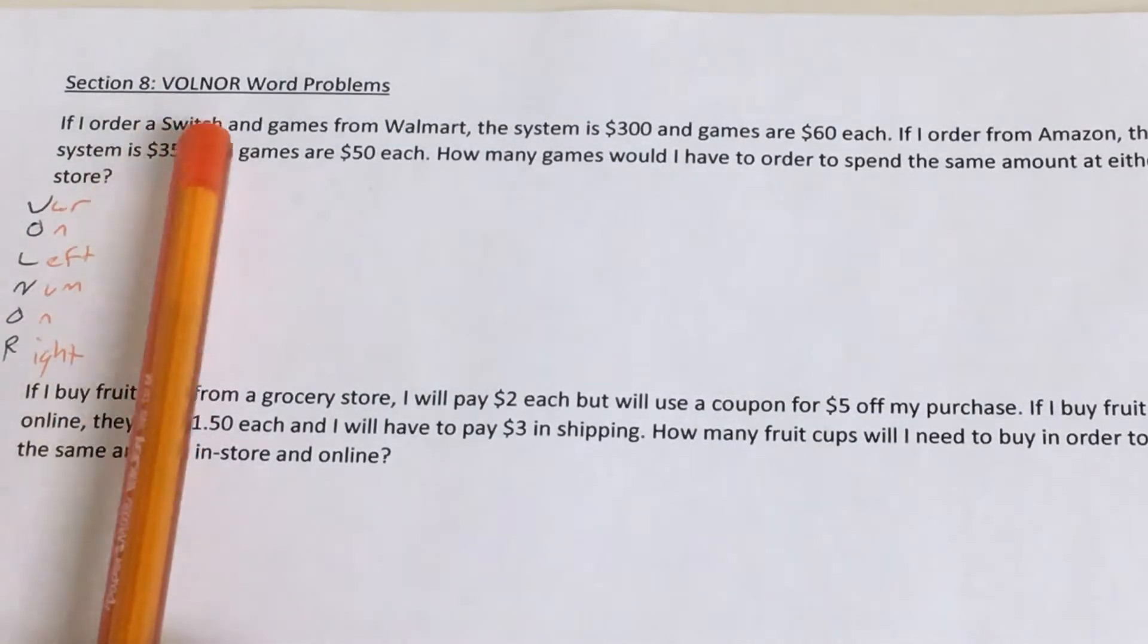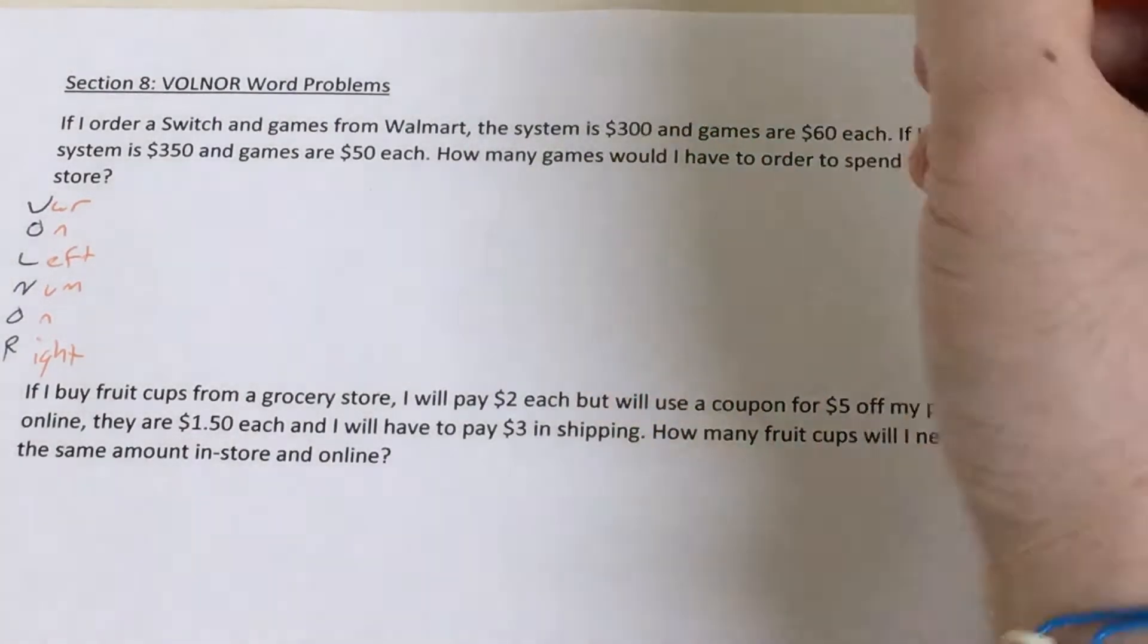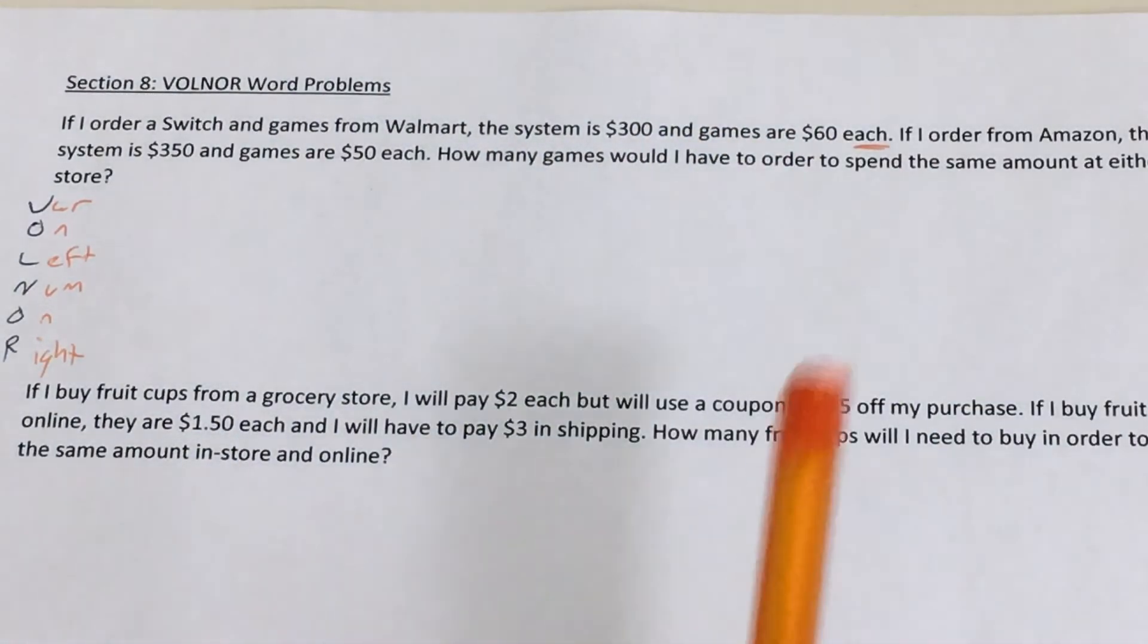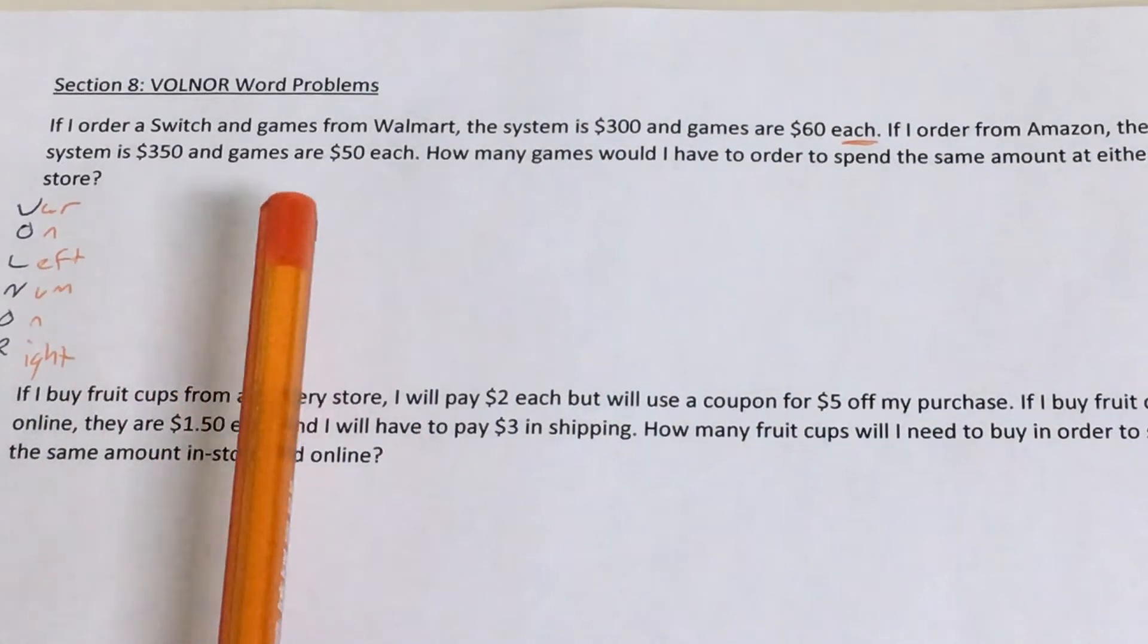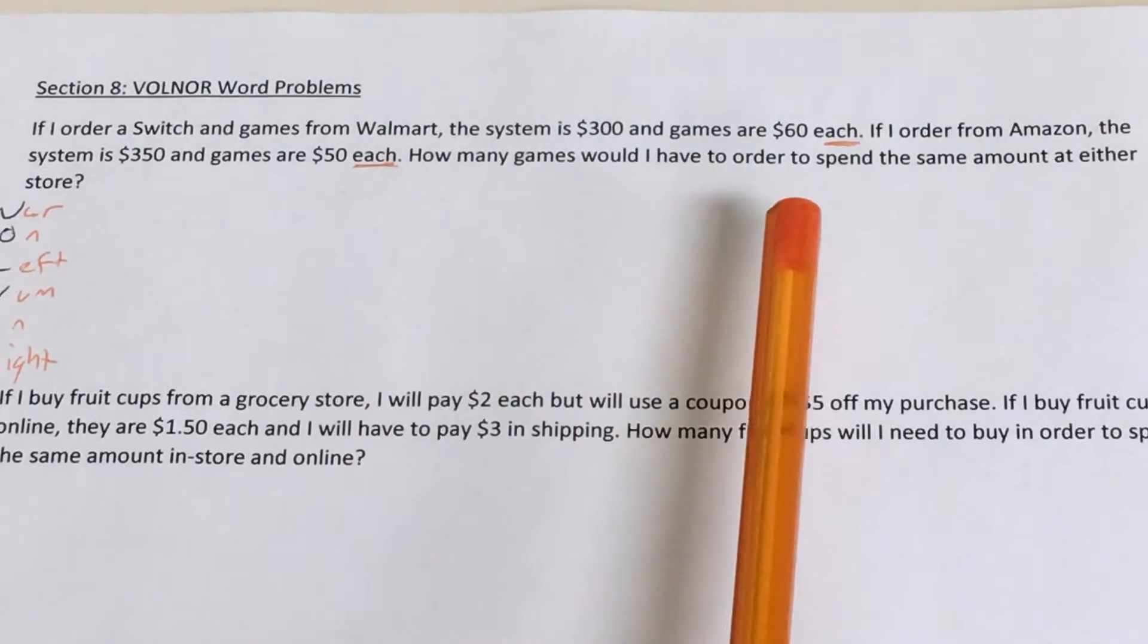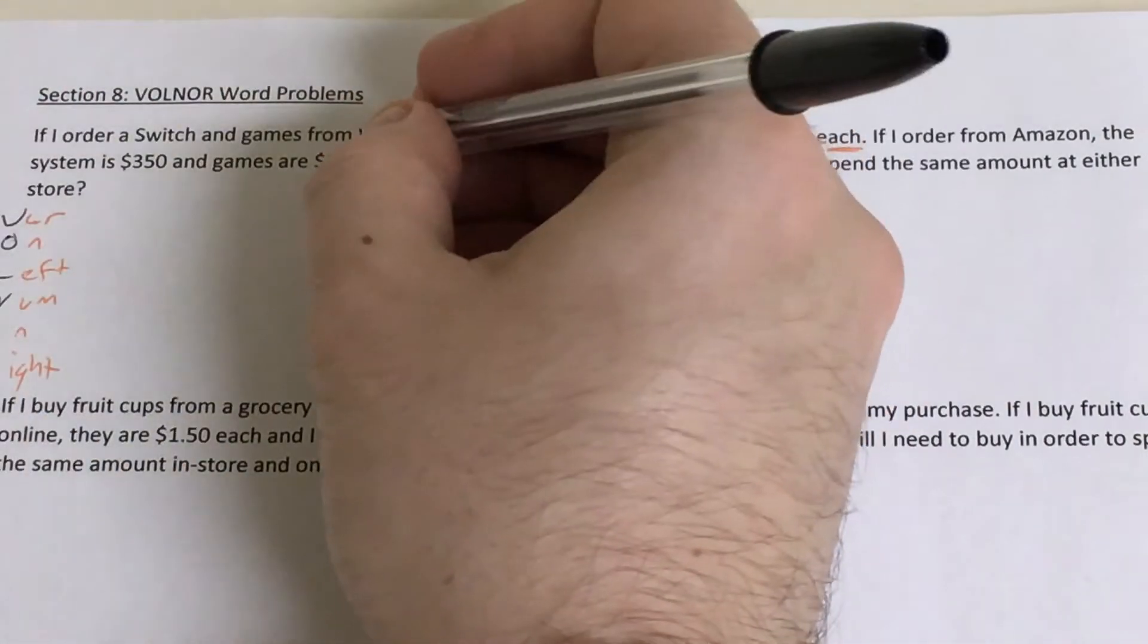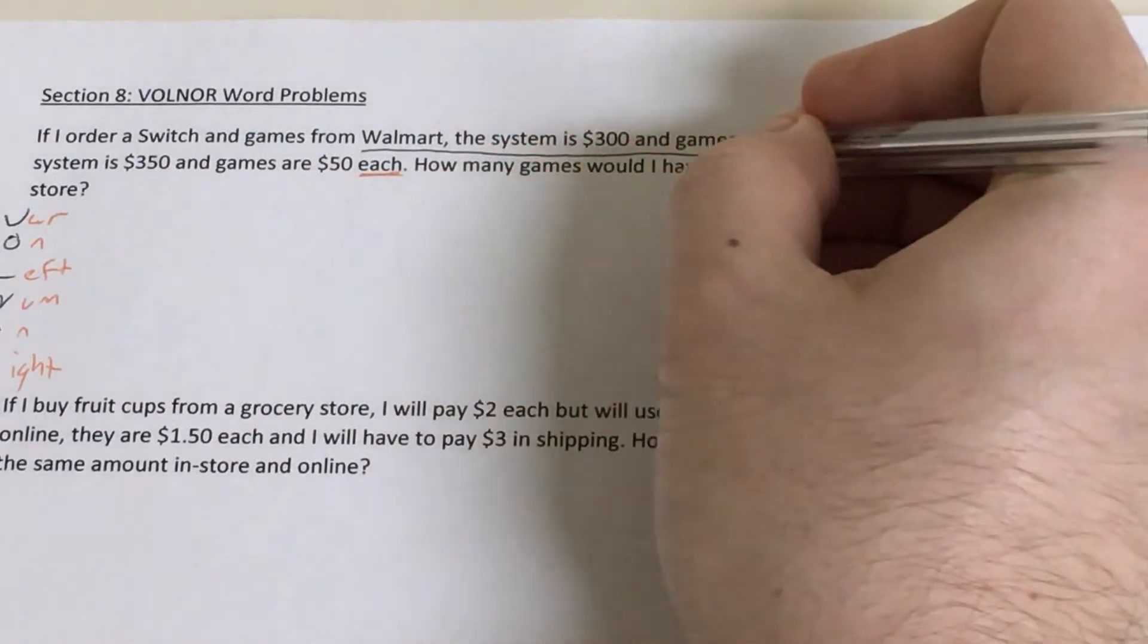First word problem says, if I order a Switch and games from Walmart, the system is $300 and games are $60 each. Okay? That word 'each' is important. I'll underline it. If I order from Amazon, the system is $350 and games are $50 each. There's that word 'each' again. How many games would I have to order to spend the same amount at either store?